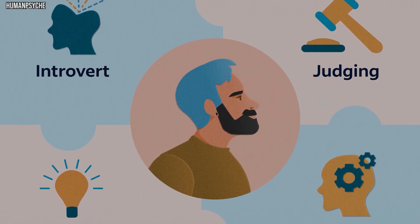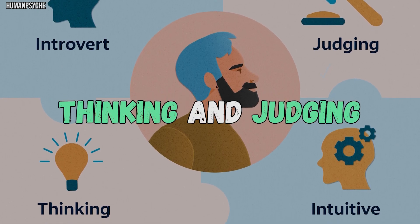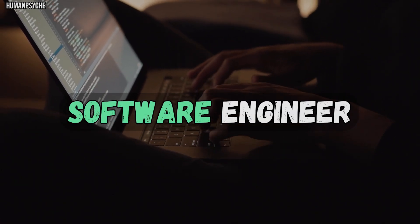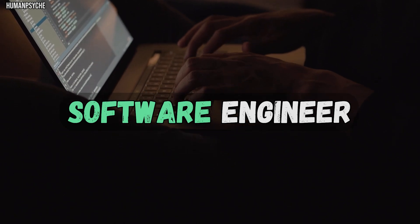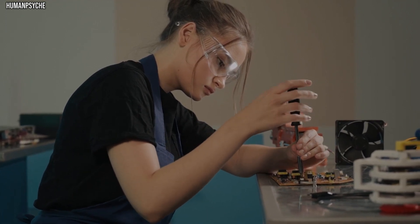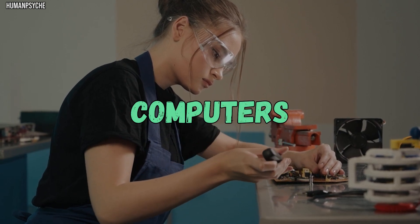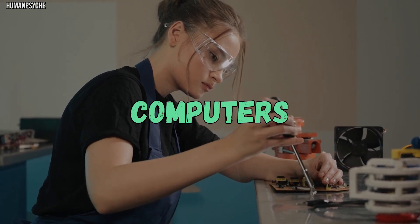For INTJs, the results are introversion, intuition, thinking and judging. Number 10: Software Engineer. A software engineer was behind every computer program you enjoy and the field is a good career match for INTJ personality types. Software engineers use their creativity to design applications that help people perform various tasks on their computers, smartphones, tablets and other devices.